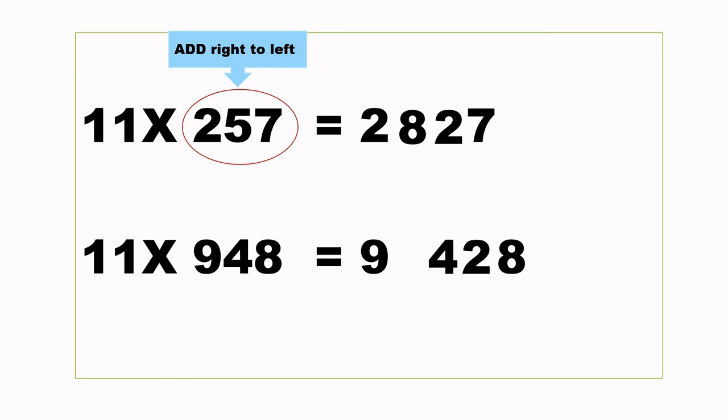We are going to add that 1 to our last digit, 9, so it becomes 10. The answer for 11 times 948 is 10,428.